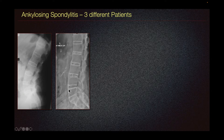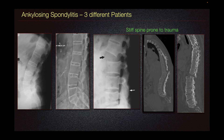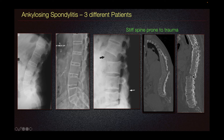Here we can see what we call a bamboo spine. Bamboo spine can predispose the patient to trauma — it is basically a stiff spine, so any kind of minor trauma can cause major fracture subluxation because the spine is rigid. These are three different patients where we can see fracture dislocation of the vertebral bodies, including at the thoracolumbar junction, and one patient with posterior subluxation in the upper thoracic spine.